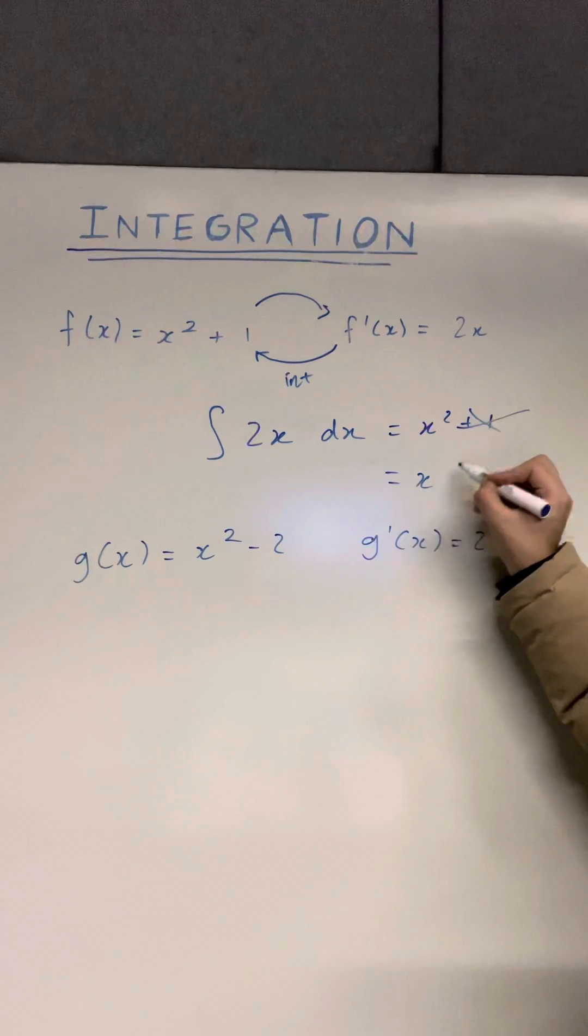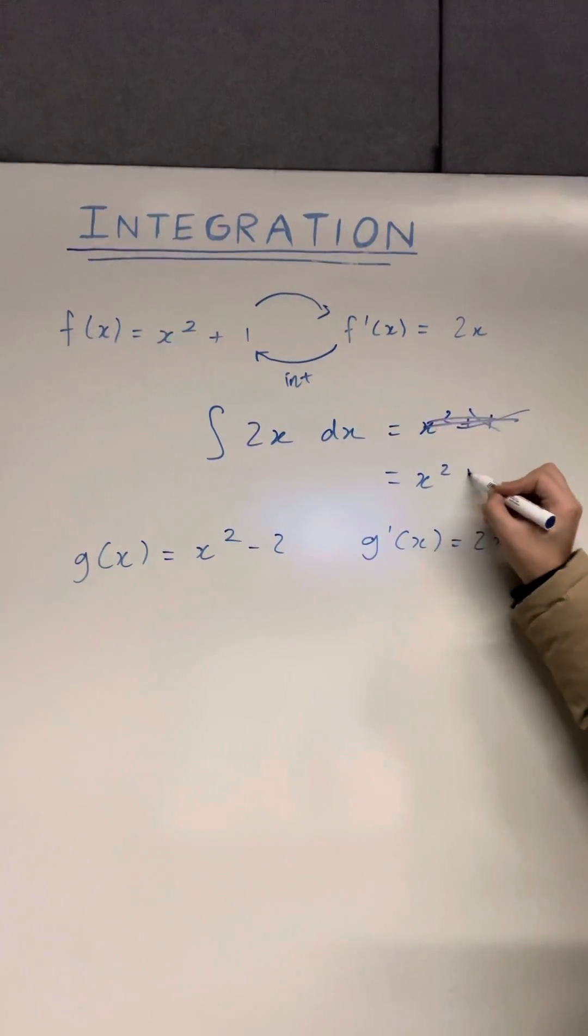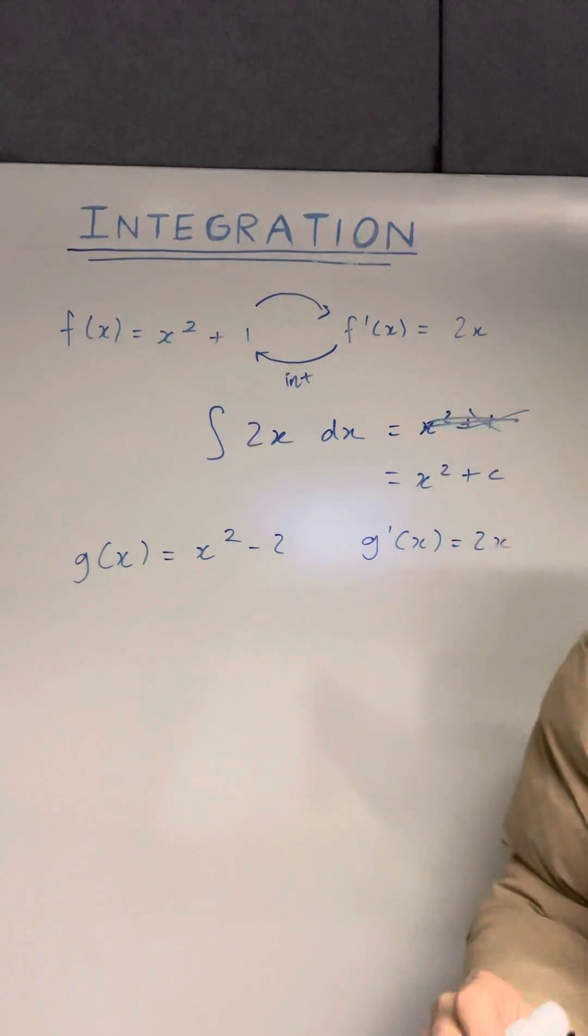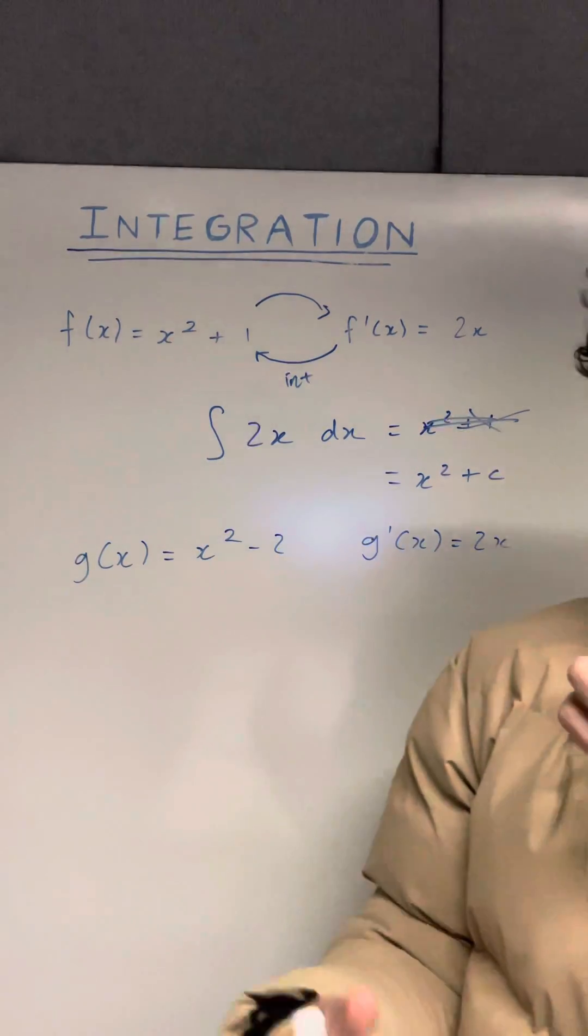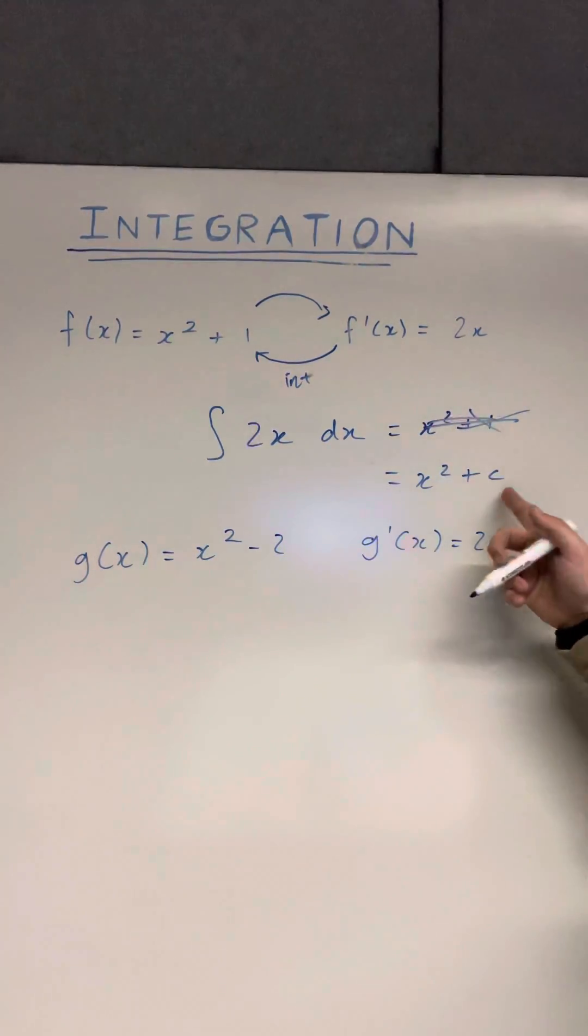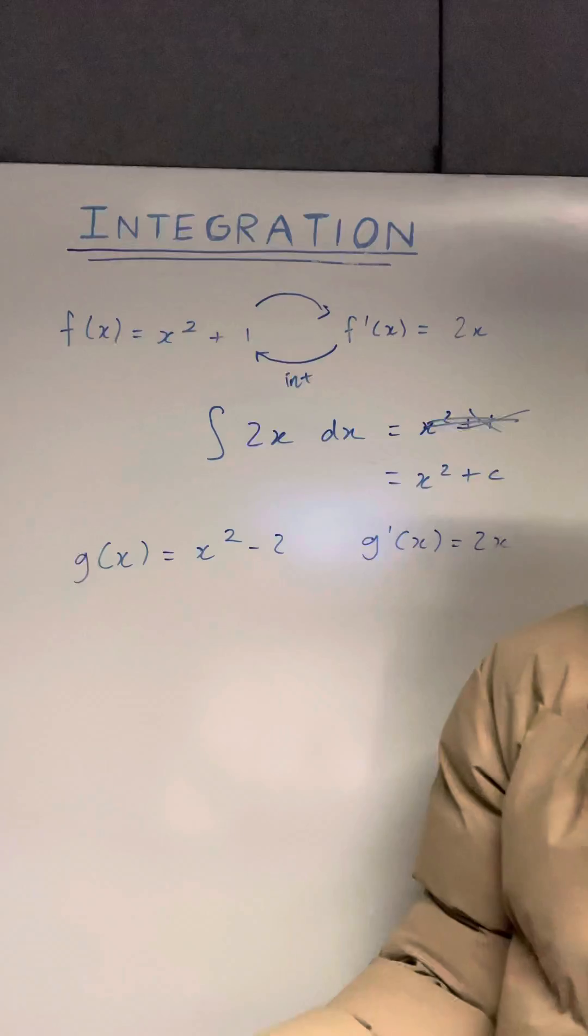But in general, what we have to write is not x squared plus one. We have to write x squared plus c. Now the plus c just represents any general constant. And the only way to find the c is with an extra piece of information.